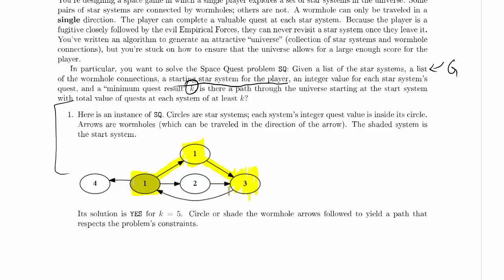Note, by the way, we're not allowed to then follow this arrow and gain another point of quest value, because we're never allowed to revisit any star system that we've been to. It said that up here: because they are a fugitive, closely followed, they can never revisit a star system once they leave it.